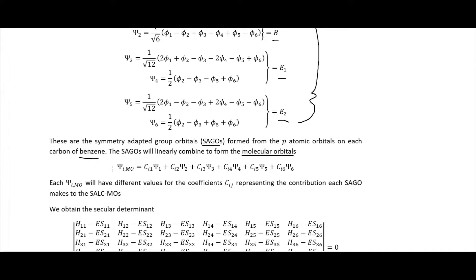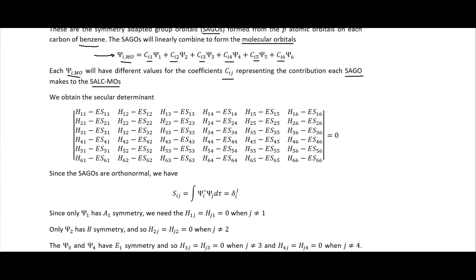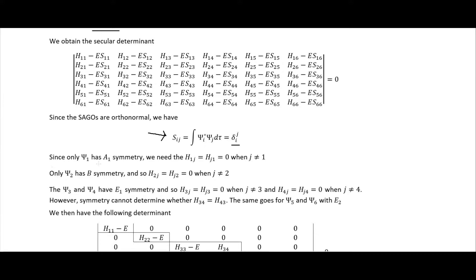The SALC MO has coefficients C which tell us about the contribution of each SAGO to the SALC MO. Each SAGO will have different coefficient values representing its contribution to the SALC MOs. We have the following secular determinant, and since the SAGOs are orthonormal, the S_ij equals the Kronecker delta.